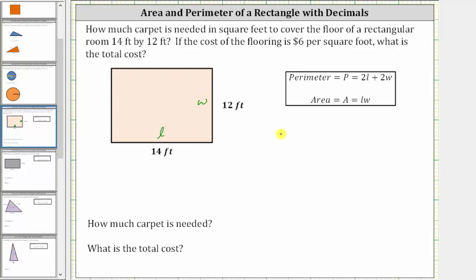And therefore the area is equal to 14 feet times 12 feet. 14 times 12 is equal to 168. And therefore the area is 168 square feet. So this is how much carpet is needed to carpet the room.